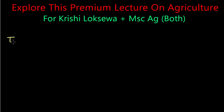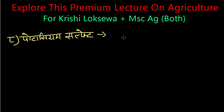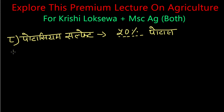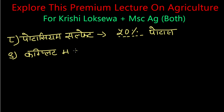Number 8, we call it potassium sulfate. What is the amount of potassium in potassium sulfate? 50% of potassium is found in potassium sulfate.